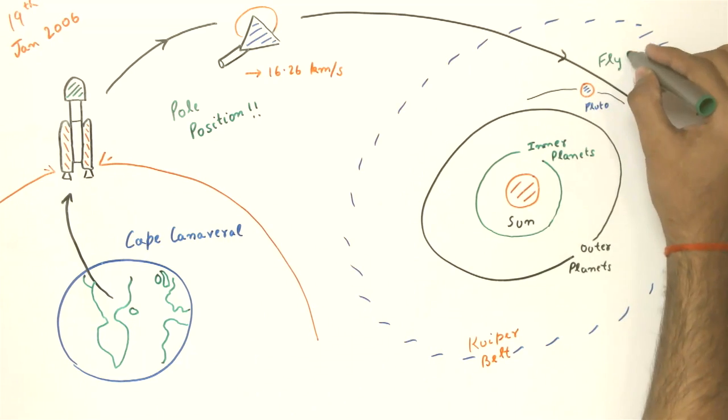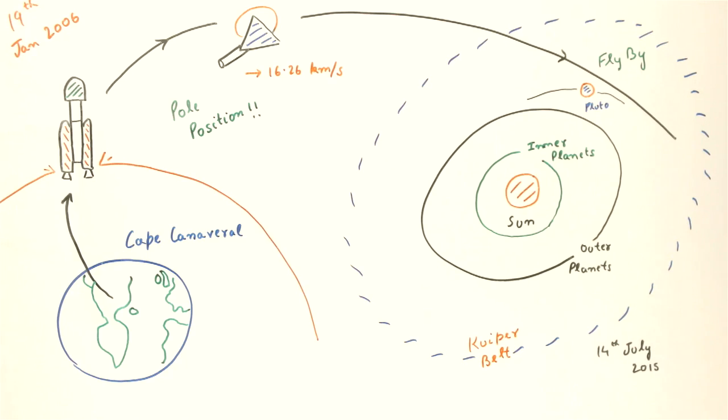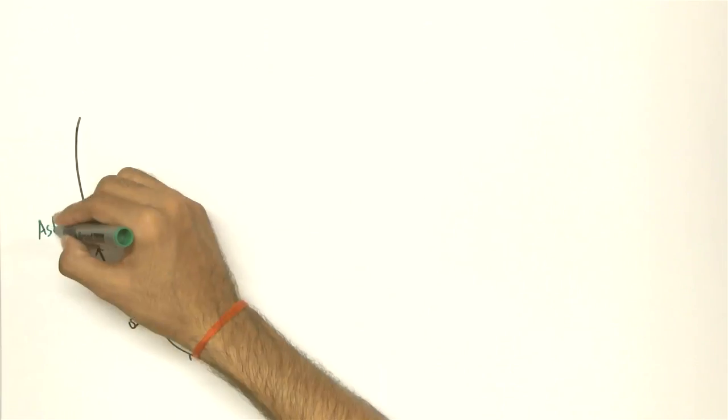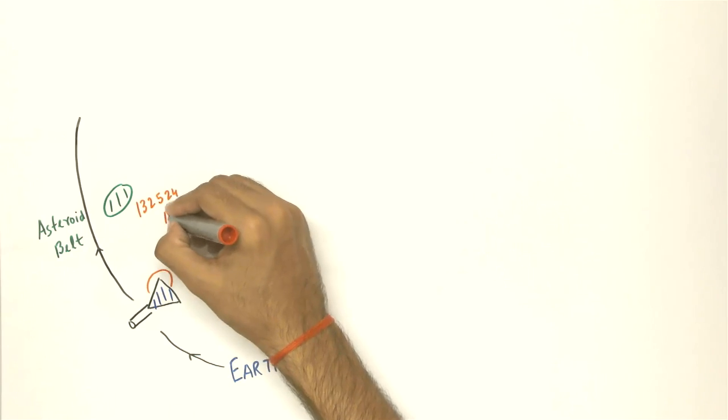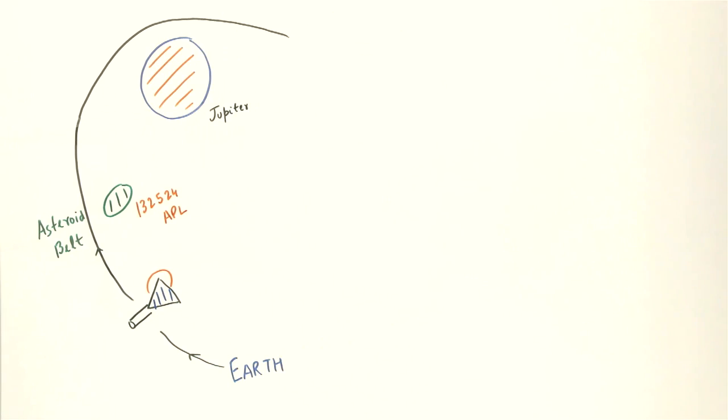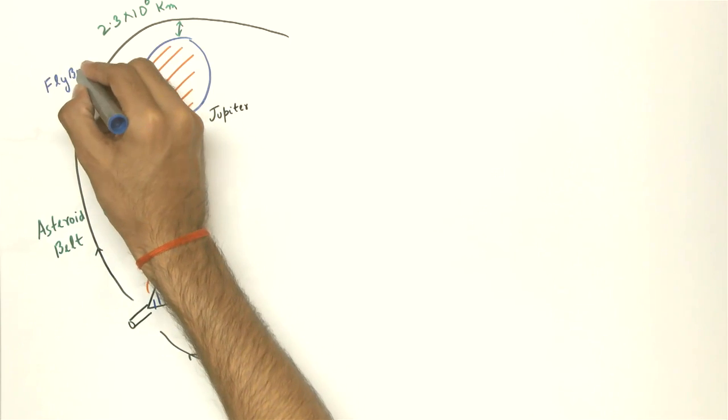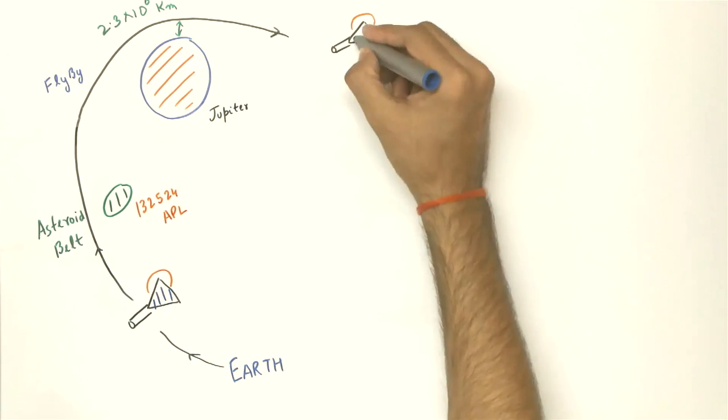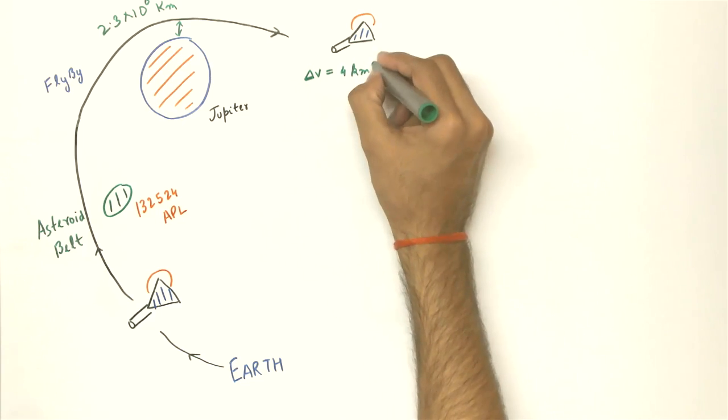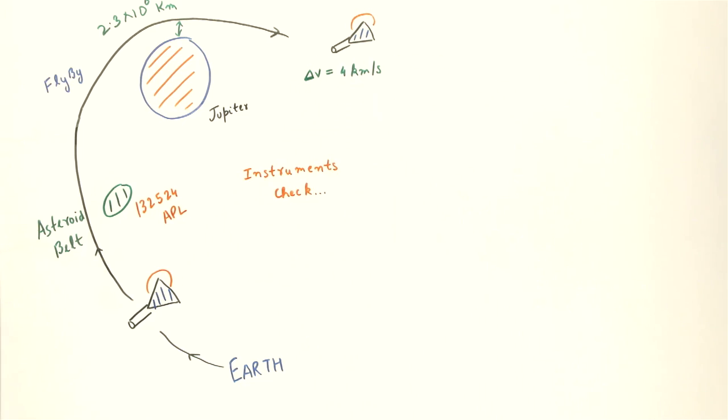The spacecraft crew performed the flyby on 14th July 2015. In its journey, the craft has studied asteroid 132524 APL and has also investigated Jupiter on its closest approach of 2.3 million km on 28th February 2007. The Jupiter flyby provided a gravity assist that increased New Horizons' speed by 4 km per second. This encounter was also used to test its instruments.